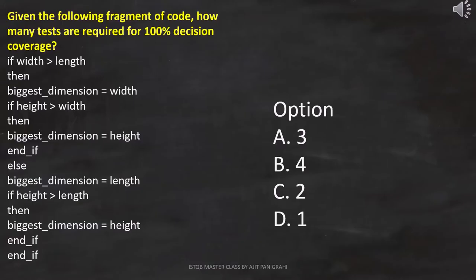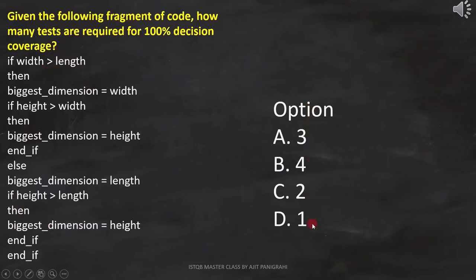Here the question is, given the following fragment of code, how many tests are required for 100% decision coverage? This is the code which we need to analyze, and then we have to select the correct option from these options.